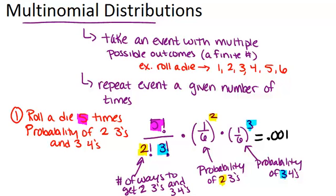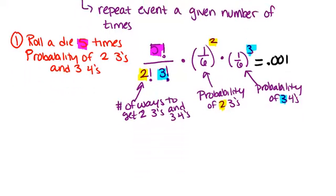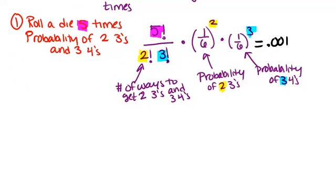Now let's try to generalize this into a formula for multinomial distributions. This time, we're going to repeat an event n times. So in the previous example, we rolled a die five times. This particular event has k possible outcomes.